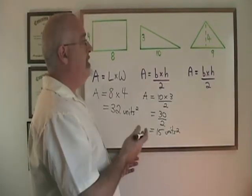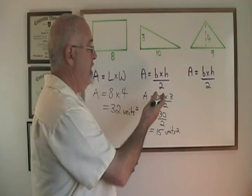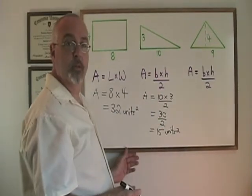If I had inverted the base and the height, I would have had 3 times 10. I still would have had 30 divided by 2 and my answer would still have been 15.